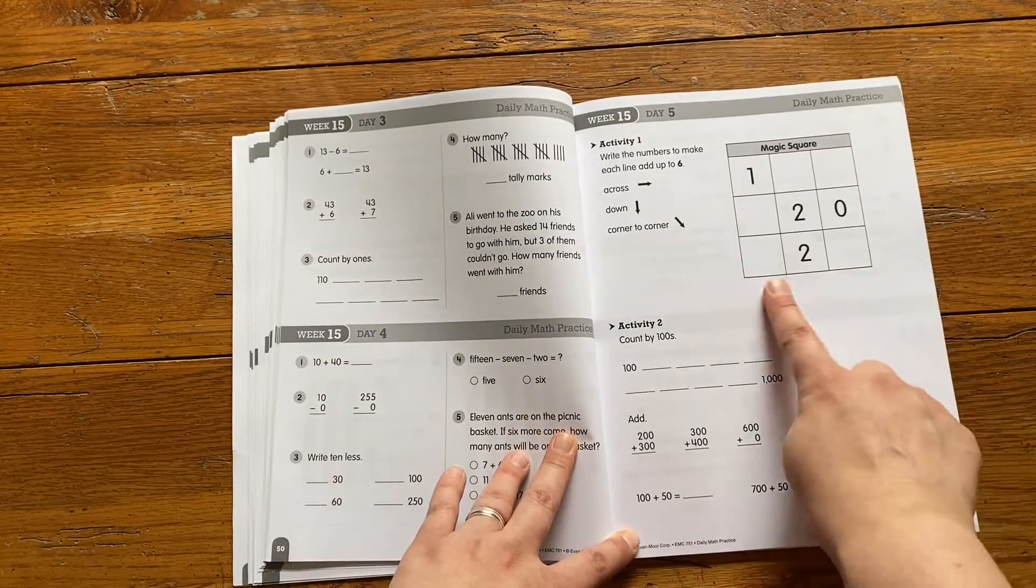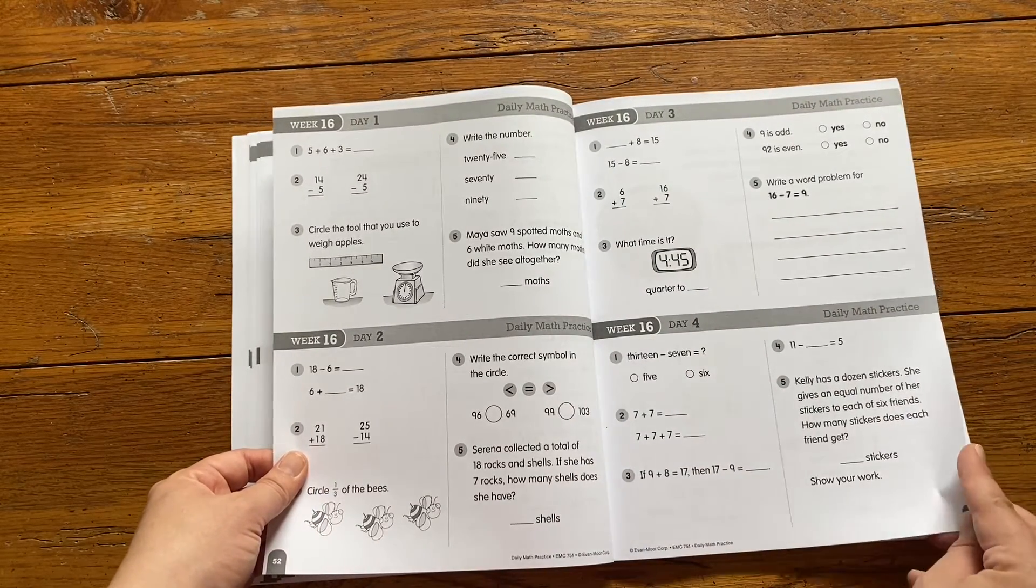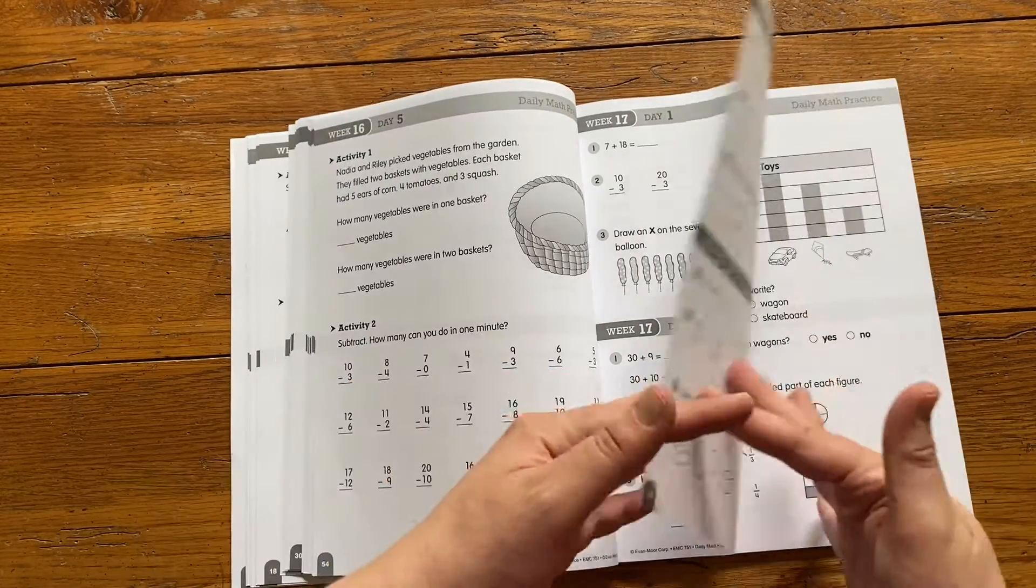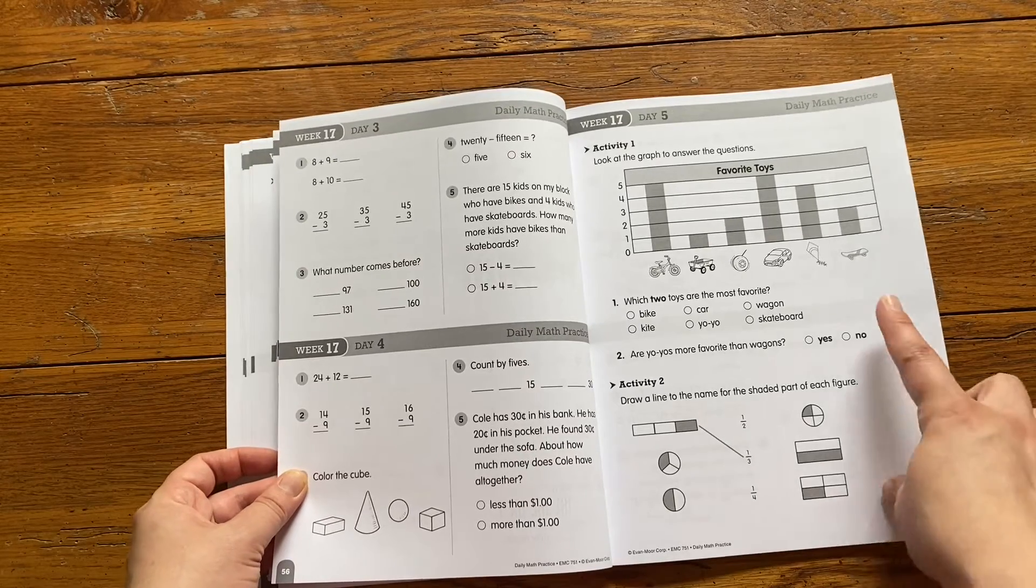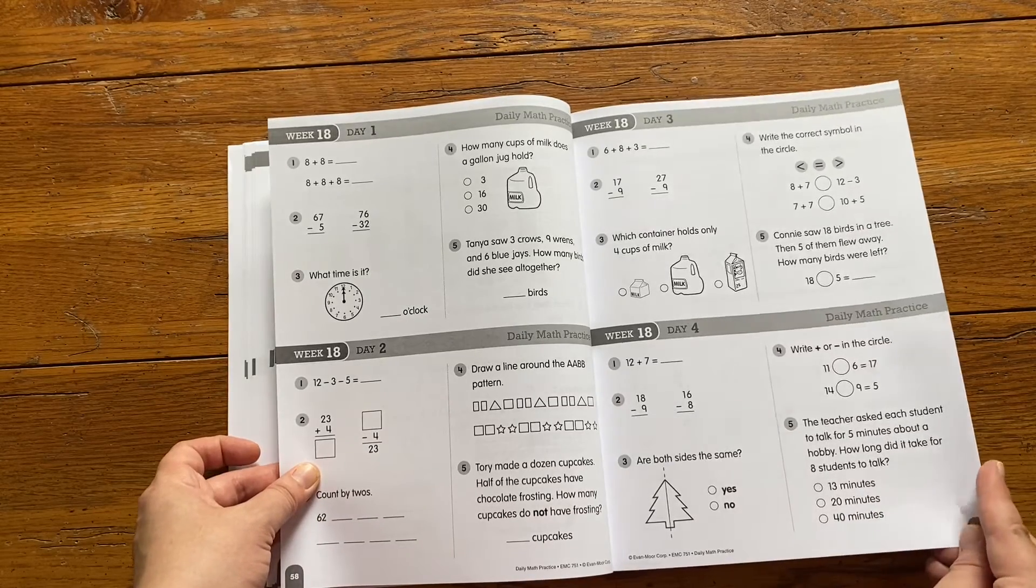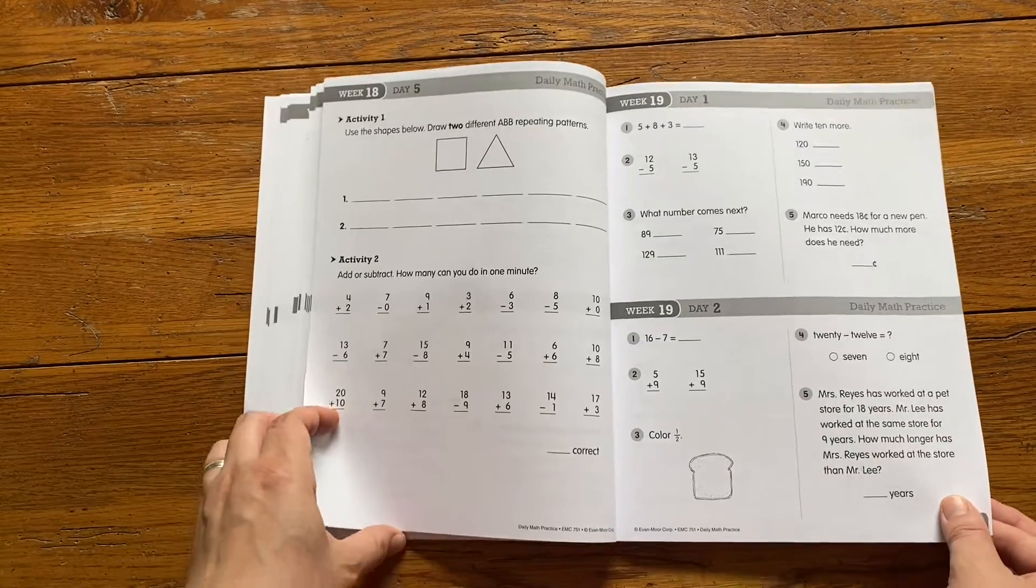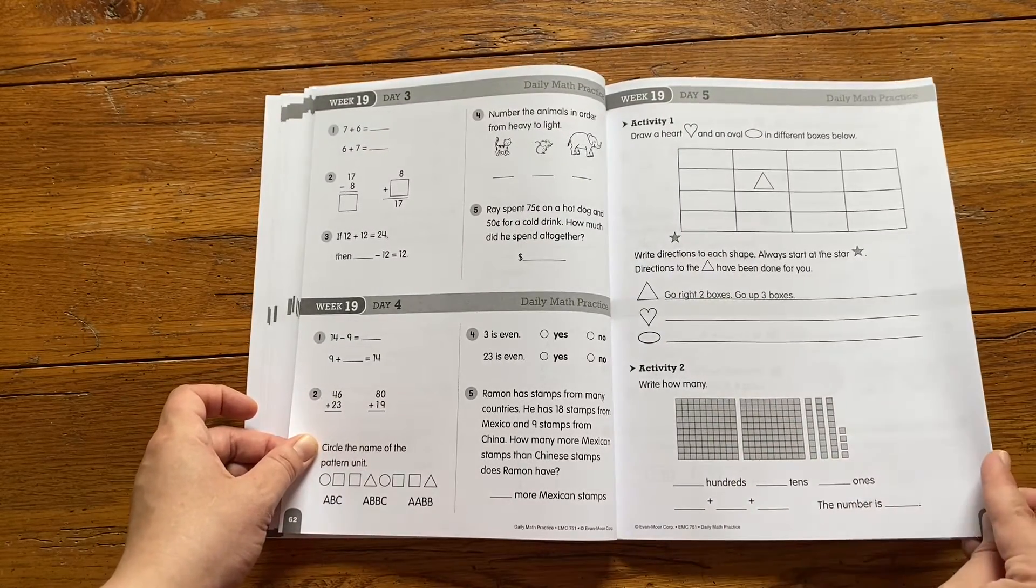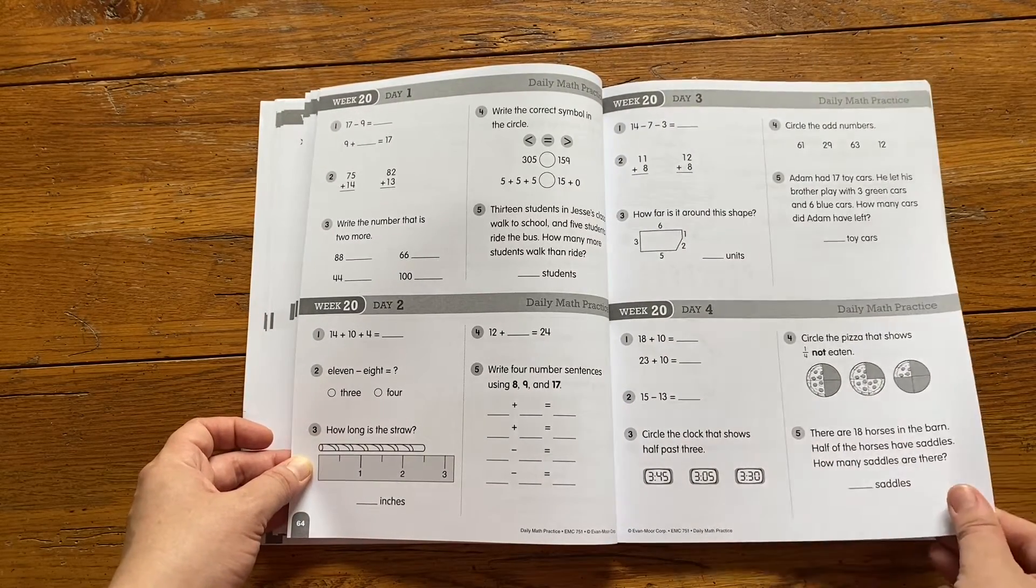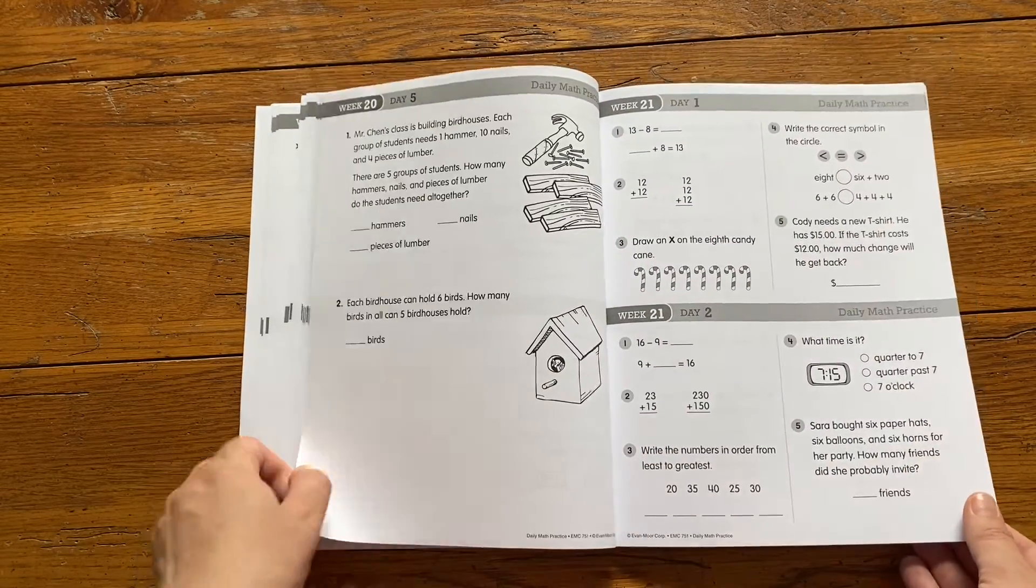This one's going to be a little more challenging, this magic square here. So that's a good little challenge problem for him. Graphing. More fractions. More patterning. So you see it just kind of repeats itself. Same kind of stuff. But I was just really impressed with the fact that it is not super boring 8 million drill problems with the same thing. I think it gives a good variety and reviews most of the things that we learned.